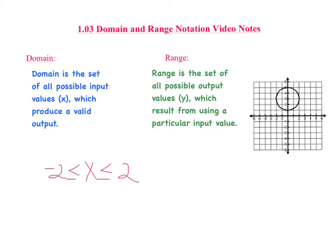Now, if we want to describe the range of this circle, the range starts along the y-axis right here where y equals 1, and as it moves upward, it stops right here where y equals 5. So we could say that y is going to be greater than or equal to 1, but less than or equal to 5. Basically what we've just done is identified the boundaries of this circle: the domain goes from negative 2 to positive 2, and the range goes from positive 1 to positive 5.